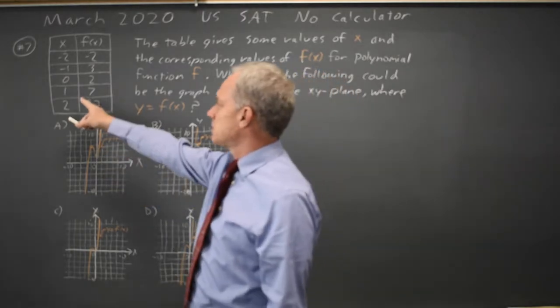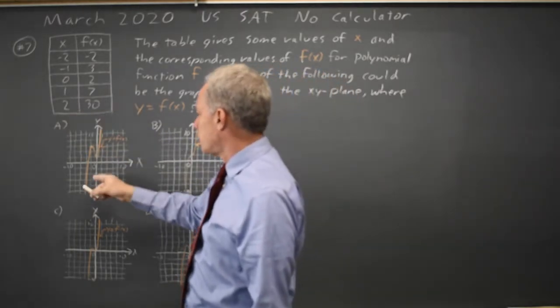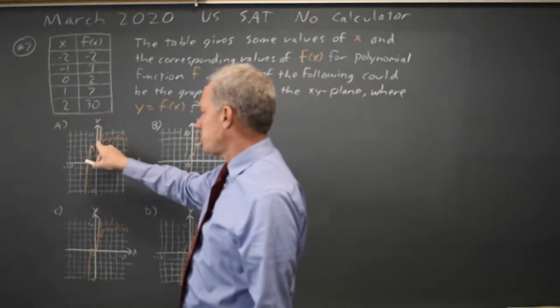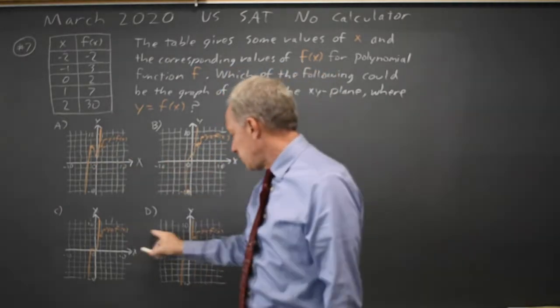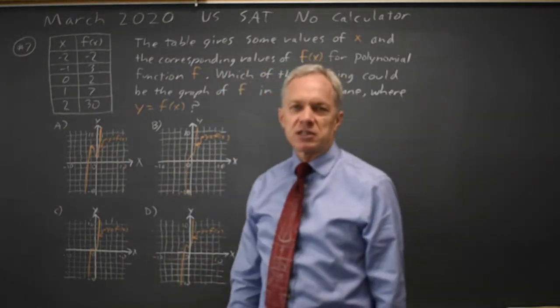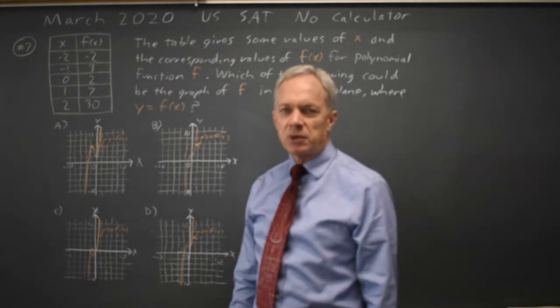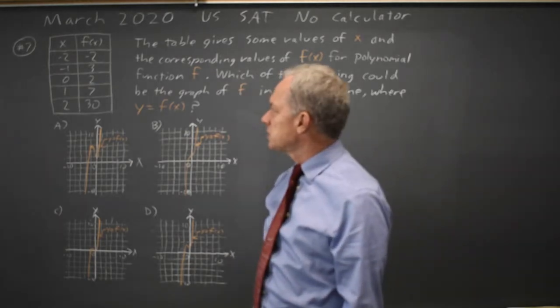If you look at the positive x's, the point 1, 7 and 2, 30, 1, 7 is plausibly on choice A, choice B, choice C, and choice D, and 2, 30 is off the scale for all four, but it's plausibly on there. Let's look at x equals 0.